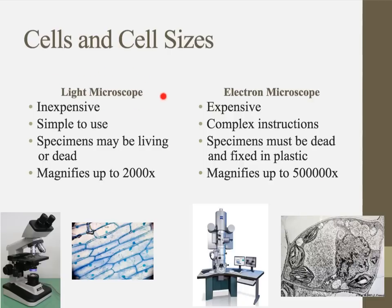In class, we're going to be using light microscopes because they are cheap and easy — relatively inexpensive and only have a couple of focus knobs. I can see dead samples prepared on slides or living things, like a drop of pond water. They can magnify up to 2,000 times. Looking at plant cells under a light microscope, I can see the cell wall, the nucleus, and the arrangement of cells. But even magnifying up to 2,000 times, there's a limit to the detail I can see.